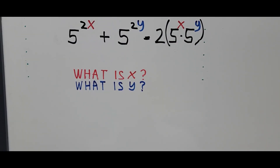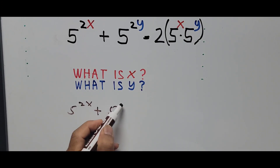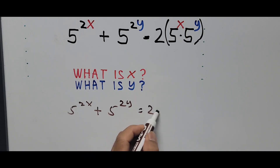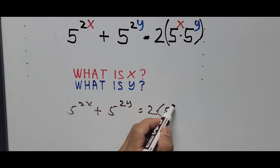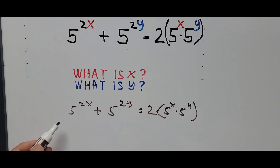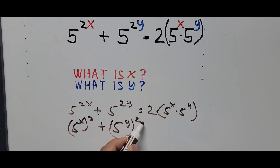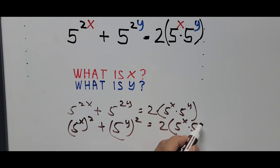First we're going to rewrite the equation again: 5 raised to 2x plus 5 raised to 2y equals 2 times 5 raised to x times 5 raised to y. Another way to rewrite these terms is (5^x) squared plus (5^y) squared equals 2 times 5 raised to x times 5 raised to y.